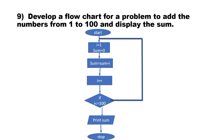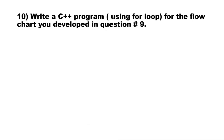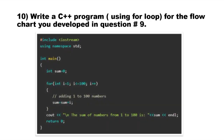If the condition is false, it will not be false. This is the program using a for loop for the flowchart developed in question 9. The code is available in C++. This is the loop: because this function is equal to 0 and it is equal to 0 to 80, the sum of numbers from 1 to 100 is displayed.